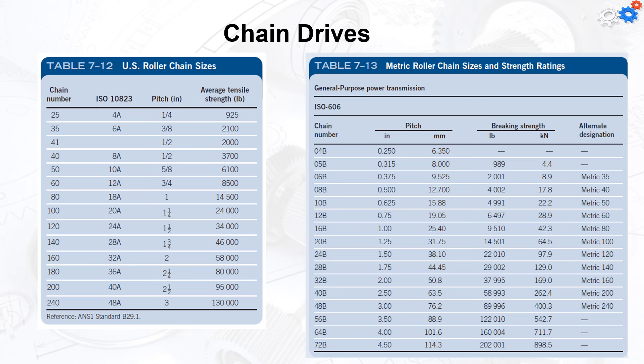The U.S. standard roller chain carries a size designation from 25 to 240, as listed in Tables 7-12 and 7-13 in the textbook.